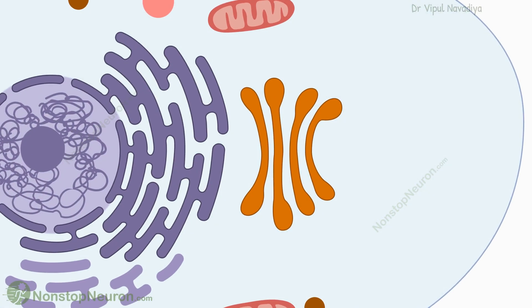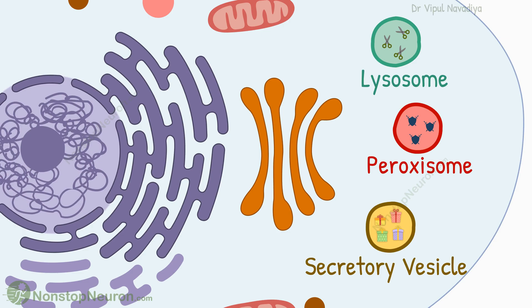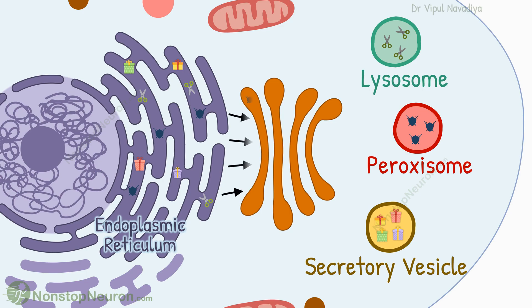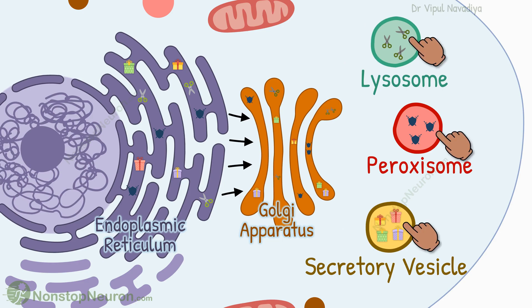In this video, we will talk about three somewhat similar organelles: lysosomes, peroxisomes, and secretory vesicles. In the video on the endoplasmic reticulum, we saw that proteins are synthesized on the rough endoplasmic reticulum. From there, they go to the Golgi apparatus, where they are further processed and segregated according to their destination. The vesicles we are going to study today are formed by budding off from this endoplasmic reticulum-Golgi apparatus system. So they all are membrane-bound vesicles, and they contain something synthesized in the endoplasmic reticulum.